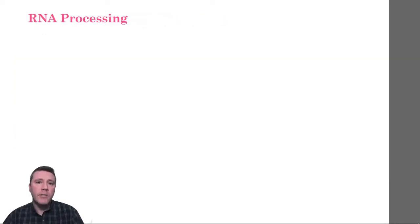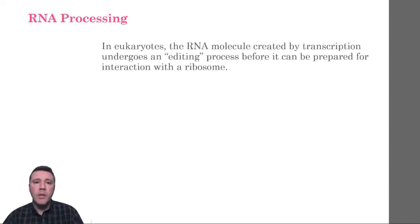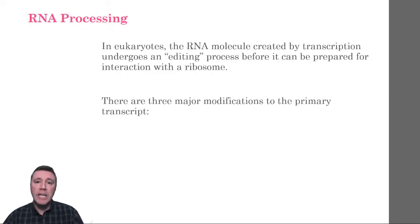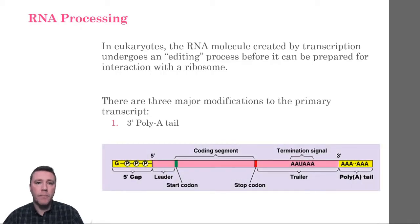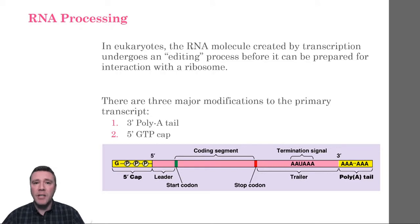Still within the nucleus, enzymes modify the primary transcript in specific ways before it is sent to the cytosol to be translated by a ribosome. Two modifications involve structural changes to the linear ends of the primary transcript. On the 3' end, an enzyme adds dozens of adenine nucleotides, forming what is referred to as a poly-A tail. The 5' end receives a cap — a modified form of guanine called GTP, guanosine triphosphate. Both the cap and the tail facilitate export of the RNA from the nucleus and help protect it from enzymes in the cytosol, delaying its degradation. The 5' cap also acts as an attachment site for the ribosome, ensuring the nucleotide sequence is translated in the correct direction.